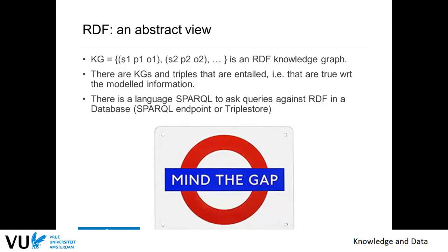Up to last week, we had a pretty abstract view on RDF. A knowledge graph was a set of triples, and that was how we defined an RDF knowledge graph. Then we defined how you get notions of entailment based on these knowledge graphs — all the statements that are basically true with respect to the model information. And finally, we learned that there is a language, SPARQL, so that you can ask queries against RDF in a database, also called a SPARQL endpoint or a triple store.